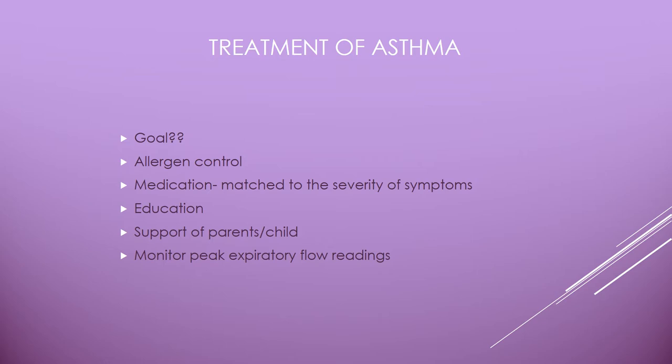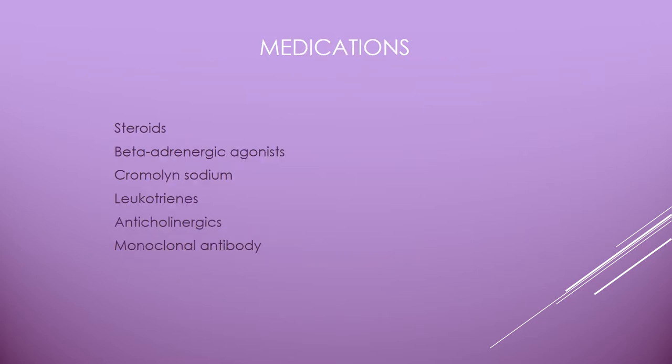Asthma meds are often given by inhalation through a nebulizer or with a spacer. Steroids reduce airway inflammation, reversing airway obstruction and controlling symptoms. Inhaled steroids are the first line of treatment for children over age five. Oral steroids may take up to three hours to take effect, with peak effect in six to twelve hours — so for an acute asthma attack, inhaled steroids are a much better option than oral steroids.